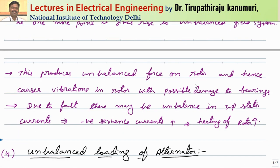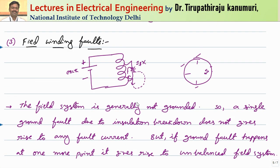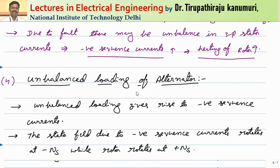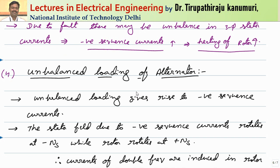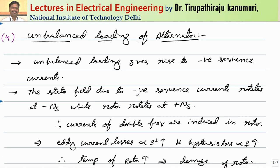Because the field distribution is not uniform, the EMF induced in different phases of the stator is not uniform, producing unbalanced currents in the three-phase stator circuits. These unbalanced currents can be resolved into positive, negative, and zero sequence components. The negative sequence component leads to heating of the rotor. To summarize: a single ground fault in the field circuit does not create any problem, but more than one ground fault creates negative sequence components and vibrations in the rotor, which is very dangerous and should be isolated immediately.